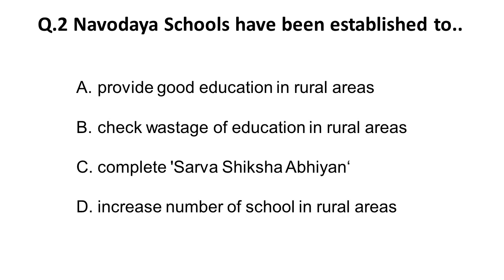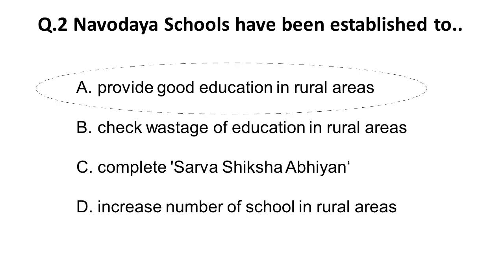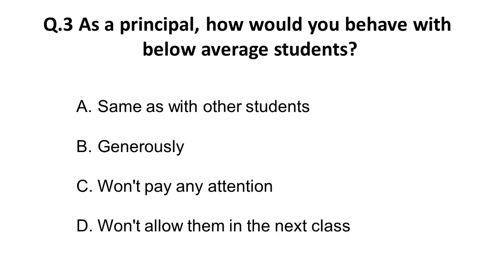The second question is: Navodaya schools have been established to do what? They have asked the motive or aim of establishing Navodaya schools. Navodaya schools are established keeping in mind the rural areas — to provide good quality education in rural areas.